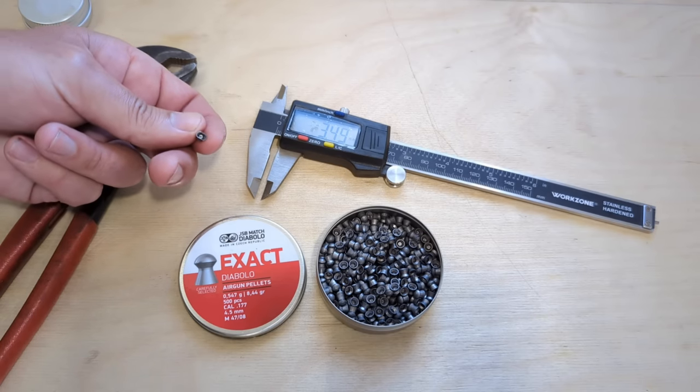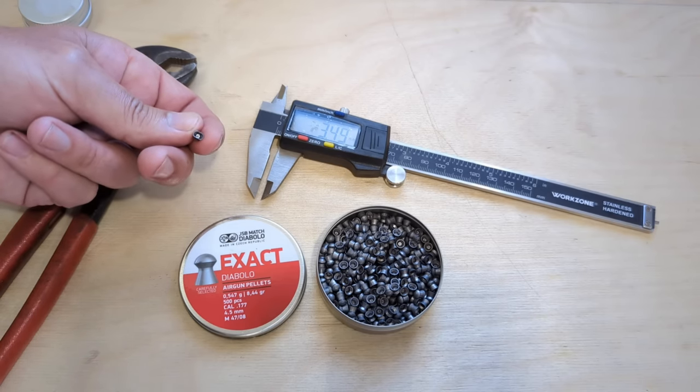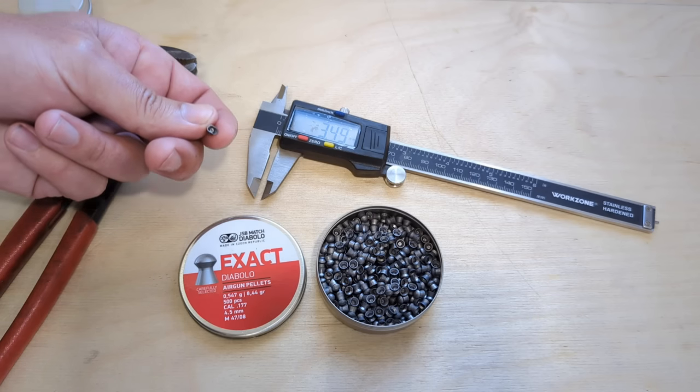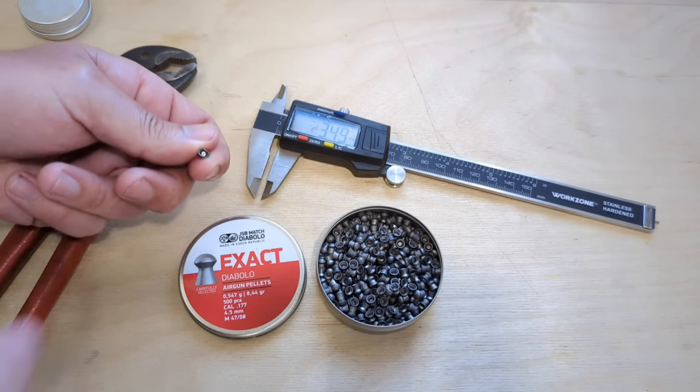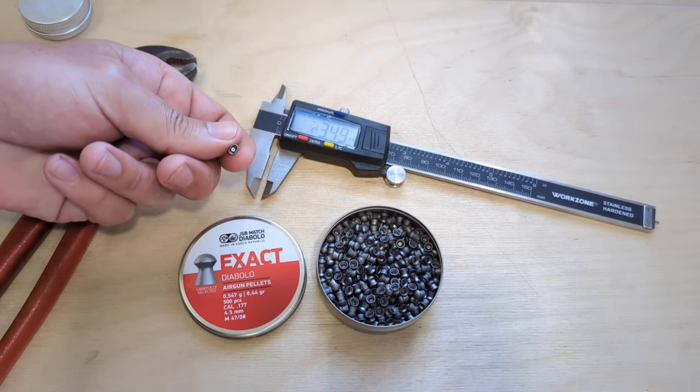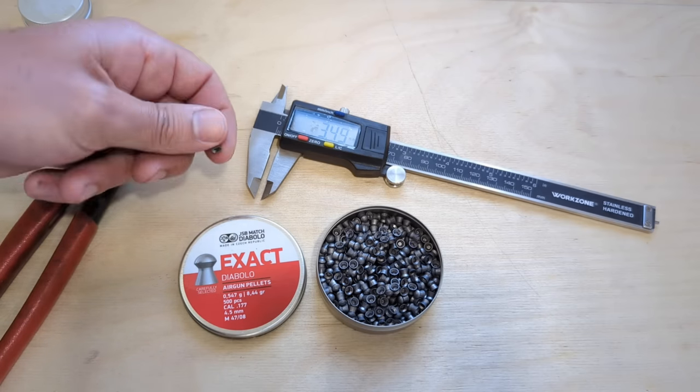Do they just need discarding? Can they be saved for plinking? Could you potentially still use them for pest control? And after that, we're also then going to see whether or not we can straighten some of these back up or round them back out again to see if we can bring a level of accuracy back to them.